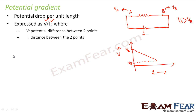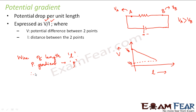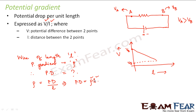Now let us see how we can make use of this in case of a potentiometer. Suppose we have a wire of length L, and we say that the potential gradient along this wire is rho. What would be the potential difference between the two end points of this wire? We know that potential gradient equals potential difference divided by L, so potential difference equals rho multiplied by L, where rho is the potential gradient. This is how we find the potential difference between two points if we know the potential gradient along that circuit.